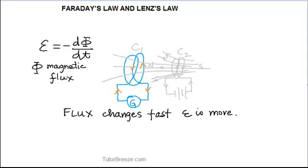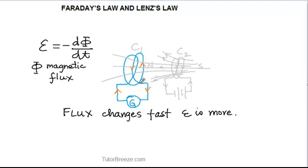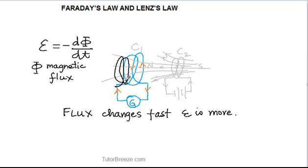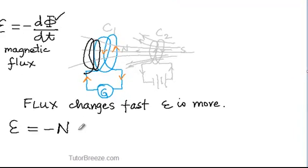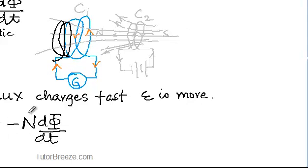If the number of turns in the coil is increased — say we have more turns — then increasing the number of turns is going to increase the induced EMF. So the formula becomes E equals minus N dΦ/dt, where N is the number of turns in the coil.